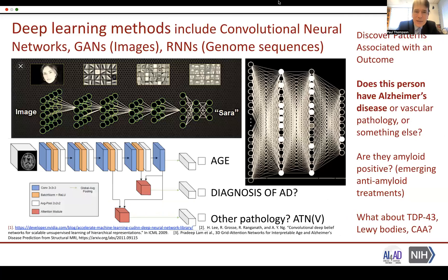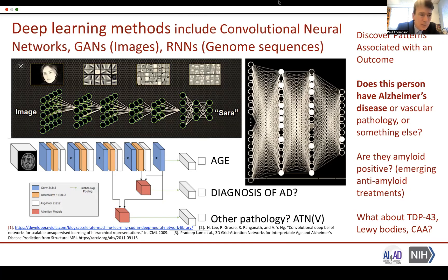Just to recap: deep learning, and in particular convolutional neural networks, are a sophisticated mathematical approach to distill predictors from large datasets to help make a decision. In a biometric authentication context, higher and higher order features are distilled from the image so that you can tell who it is. In an imaging context, the decisions being made include a person's diagnosis, whether they have different pathologies such as tau or vascular disease, and whether they are amyloid positive.